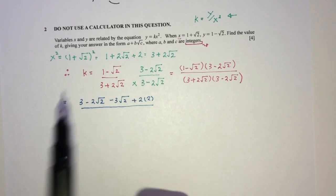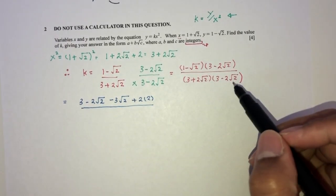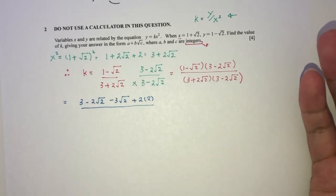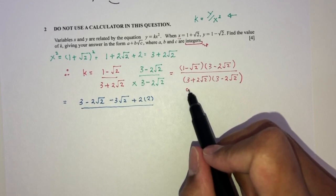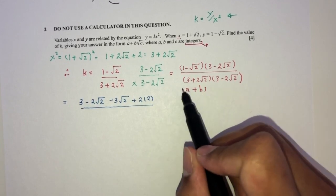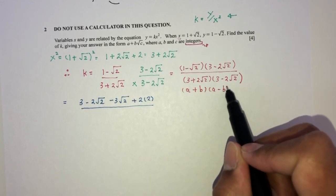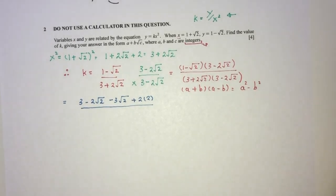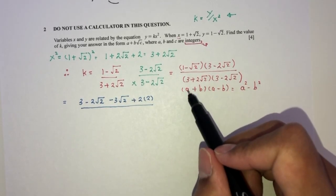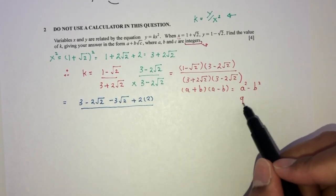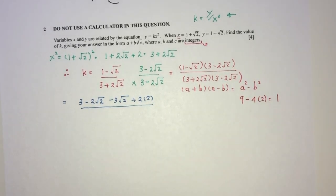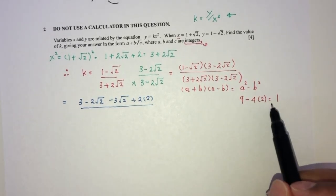For the denominator, this is the difference of squares. When you have a plus b times a minus b, that equals a squared minus b squared. So a squared will be 3 squared which is 9, minus b squared which is 4 times 2 equals 8. So 9 minus 8 equals 1.